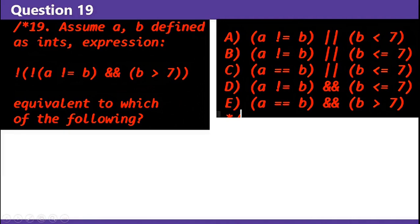For question 19, applying De Morgan's law to the given expression involves flipping the AND to an OR and distributing the logical NOT to the two operands. Additionally, the opposite of greater than is less than or equal to. Therefore, the answer is B.